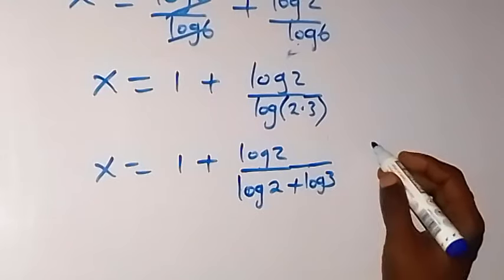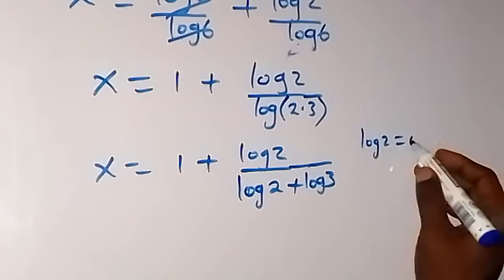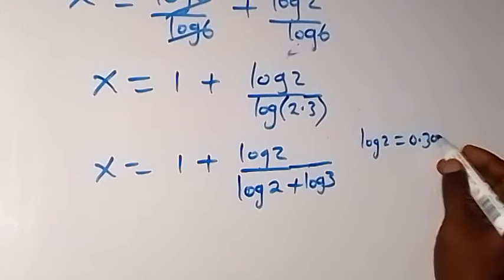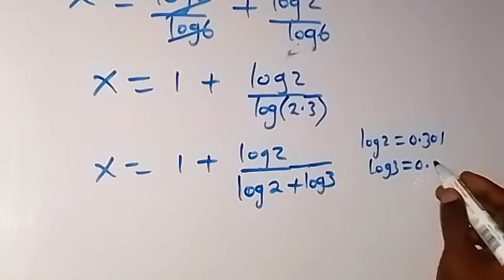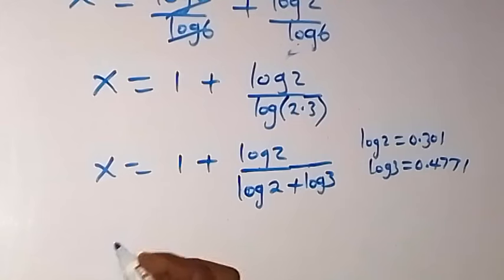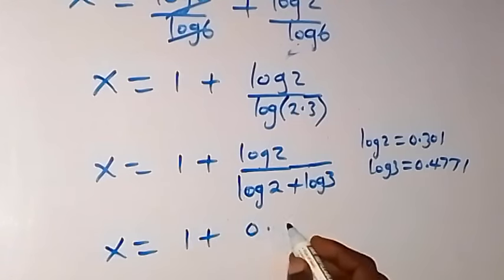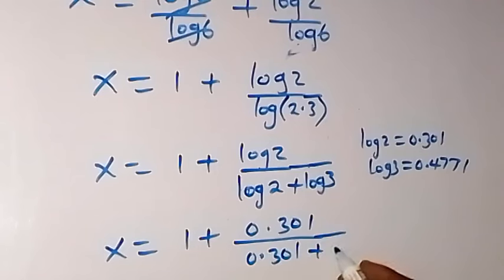Now we can substitute the decimal values: log 2 equals 0.301 and log 3 equals 0.4771. When we substitute, x equals 1 plus 0.301 over 0.301 plus 0.4771.